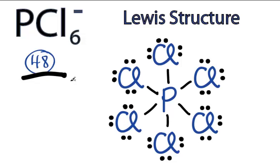That makes this the Lewis structure for PCl6 minus. One last thing — since it's an ion, we should put brackets around it and a negative 1 outside to show that it's an ion.